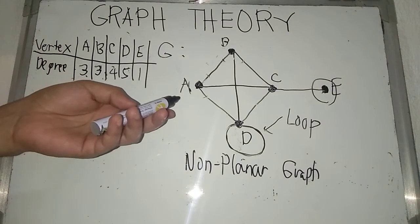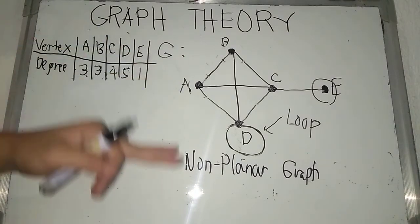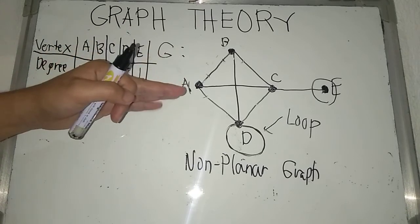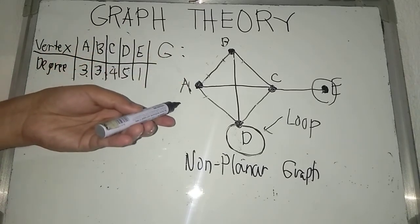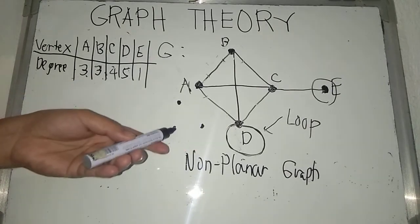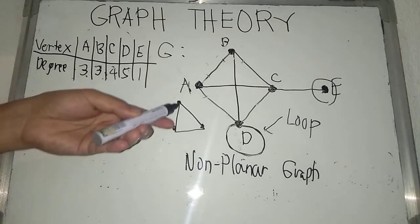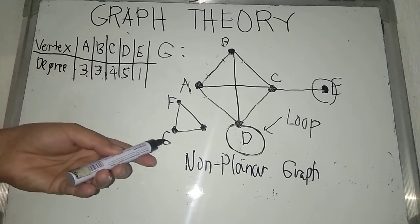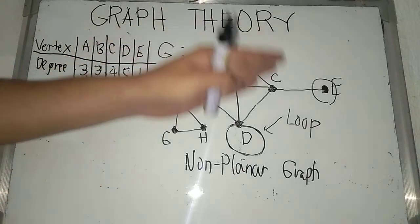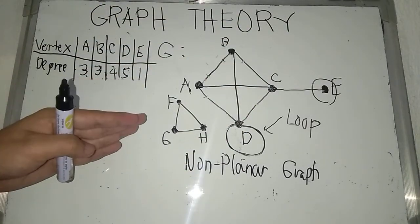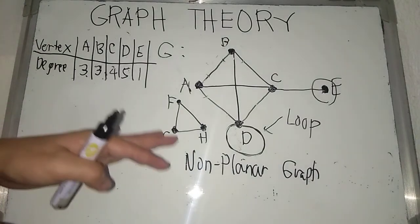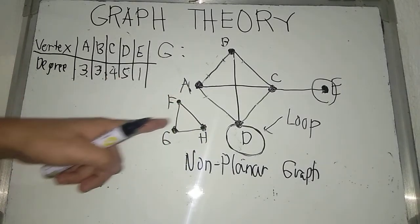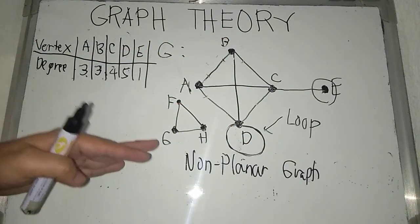Now, this non-planar graph is also an example of a connected graph. But if you have another graph here on this side, and we call this graph having vertices of F, G, and H, then this overall graph is an example of a disconnected graph, because this graph is not actually connected at all to the second graph.